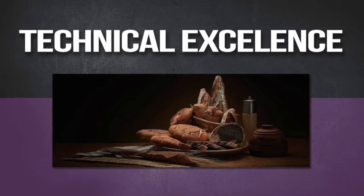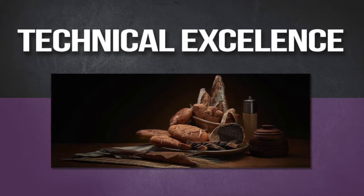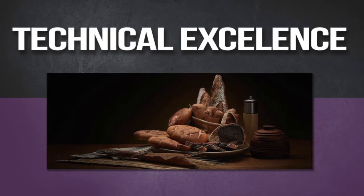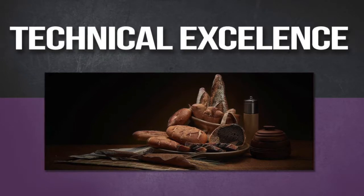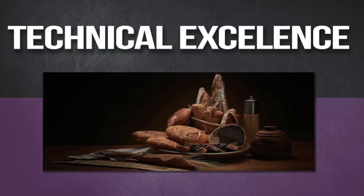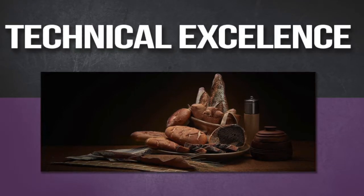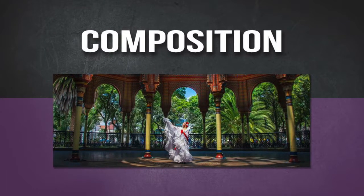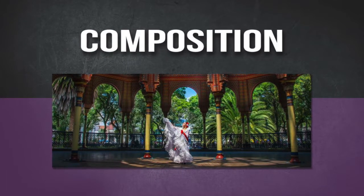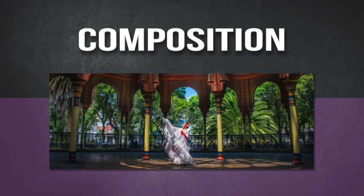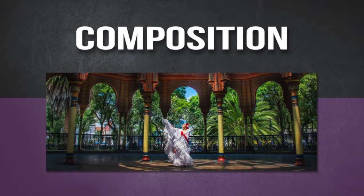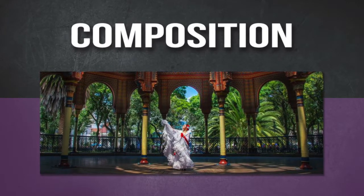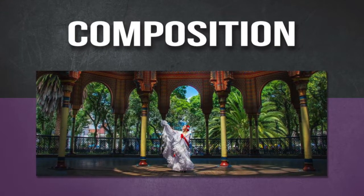Technical excellence: is the image technically strong? Is the lighting and posing, where applicable, done correctly? Does the creator demonstrate fundamental knowledge of photography to take this image? Are correct lens selection, perspective, and color balance taken into consideration, as well as retouching and composition where applicable? Composition: is the composition strong and possibly innovative? Does the composition support the story or center of interest in the image? Has the photographer used design elements correctly? Proper composition holds the viewer's attention to the image and emphasizes the message the creator wants to convey.